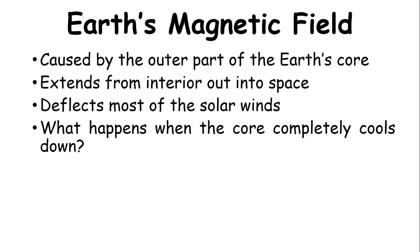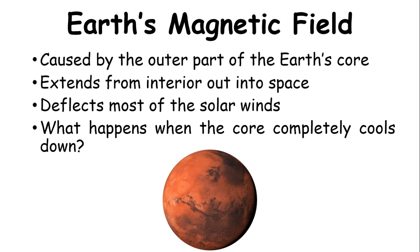What happens when the core completely cools down? When this happens, Earth can become like Mars. With a very thin atmosphere, with no volcanoes or earthquakes, it would be very difficult for life to survive.